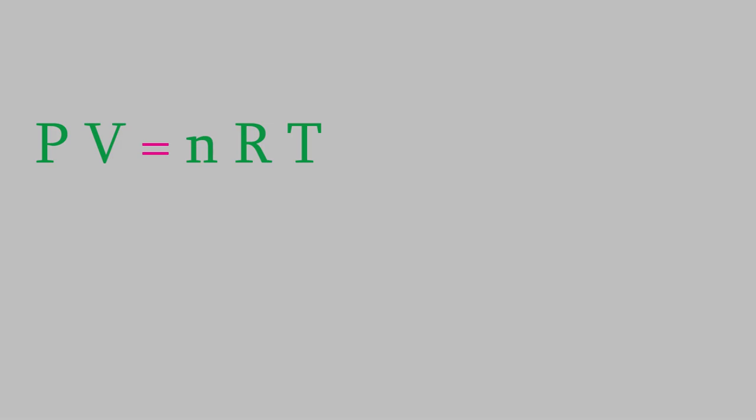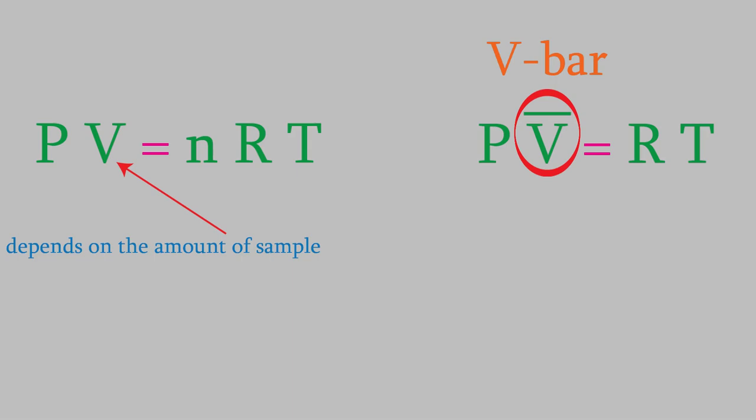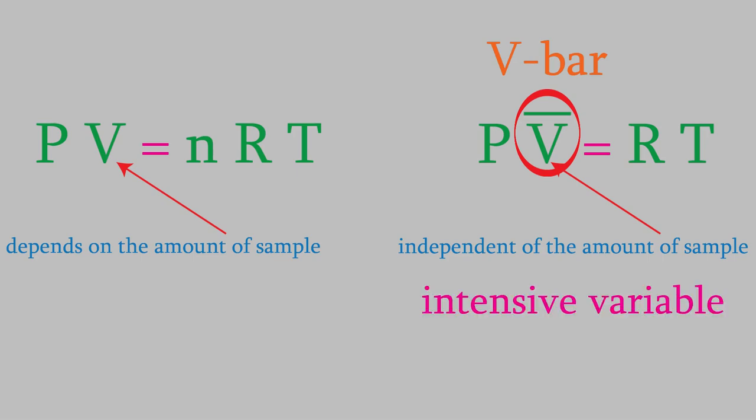So the ideal gas law is a very useful and practical tool we have in our toolkit. We can also write it this way. This quantity, called V bar, is just the volume per mole. The reason we sometimes use this quantity instead of just V is because the volume depends on the amount of sample. The bigger the sample, the larger the volume, of course. But the volume per mole is always the same at a particular pressure and temperature for any given gas. That kind of property, which is independent of the size of the sample, is called an intensive variable. So V bar is an intensive variable. Meanwhile, a property like volume that does depend on the sample size is an extensive variable. As we'll see throughout this course, we often try to use intensive variables instead of extensive ones in our equations when we can, because they can often be treated like constants, which simplifies the equations quite a lot.